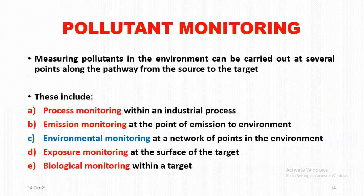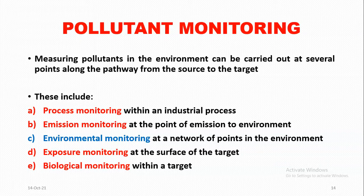Pollutant monitoring: Measuring pollutants in the environment can be carried out at several points along the pathway from the source to the target. These include: (a) process monitoring — within an industrial process; (b) emission monitoring — at the point of emission to the environment; (c) environmental monitoring — at a network of points in the environment; (d) exposure monitoring — at the surface of the target; and (e) biological monitoring — within a target.